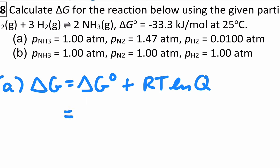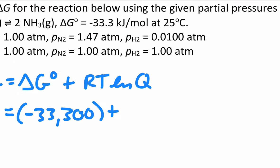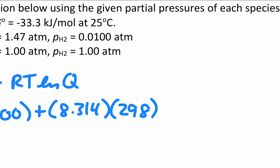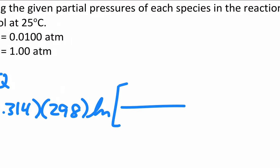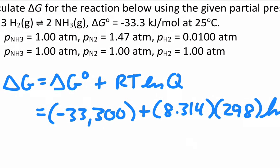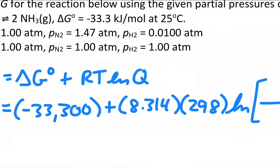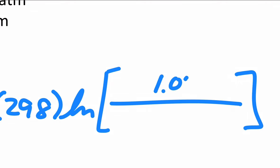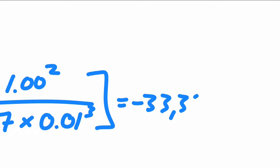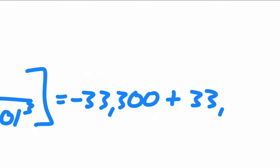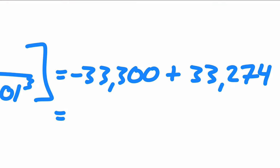Okay. So plugging in our values from up above, we have a standard delta G of negative 33,300 in joules plus R is 8.314. This is still 25 Celsius, so 298 Kelvin. I'm going to put the reaction quotient right in the equation. We get the natural log of a fairly big expression. Looking at the reaction, we have ammonia squared divided by nitrogen times hydrogen cubed. And if I just plug in the numbers that are given, that is 1.00 squared divided by 1.47, plugging in the partial pressures, times 0.01 cubed. And when you look at the terms, you get negative 33,300 for the standard, plus it's 33,274.